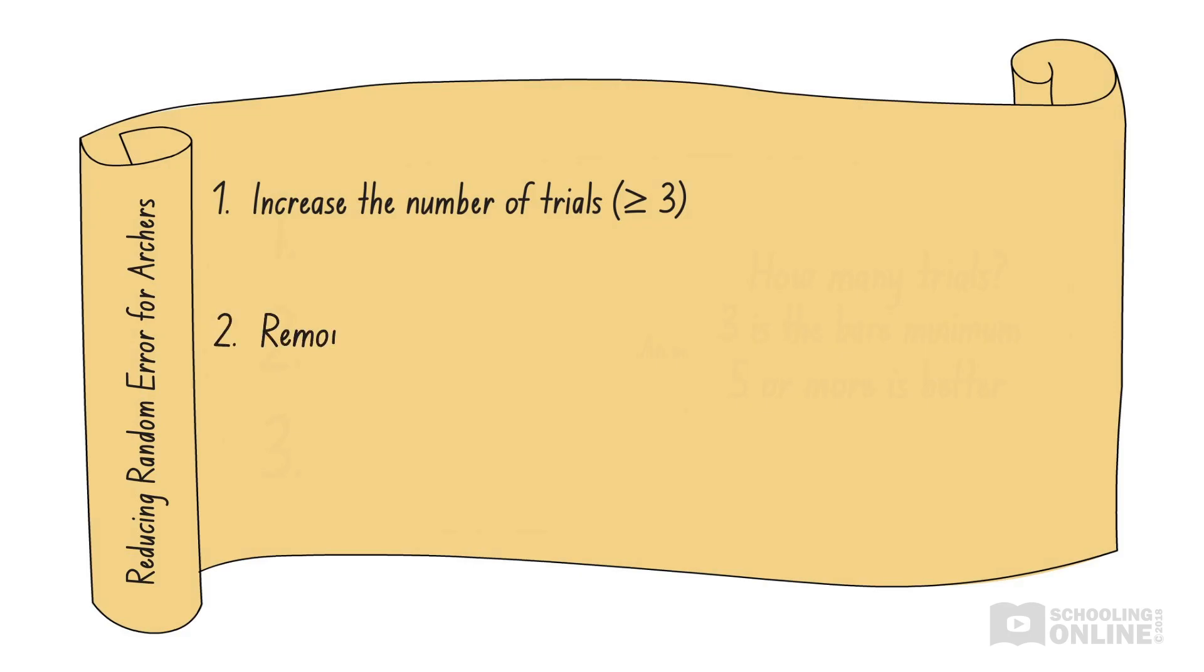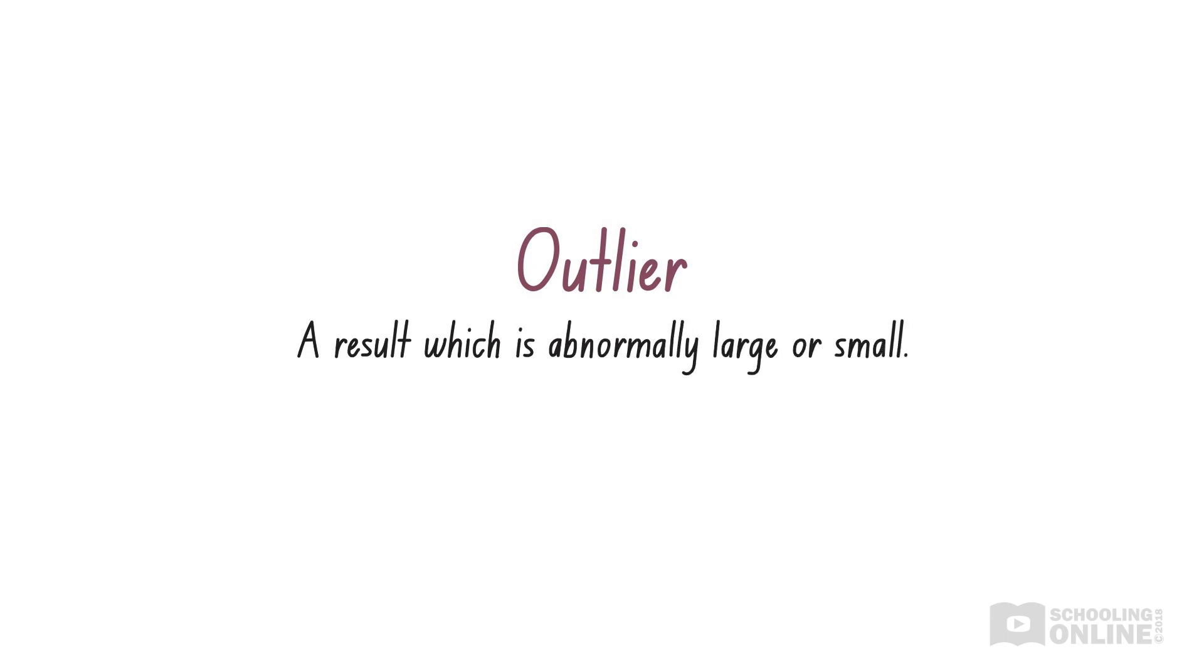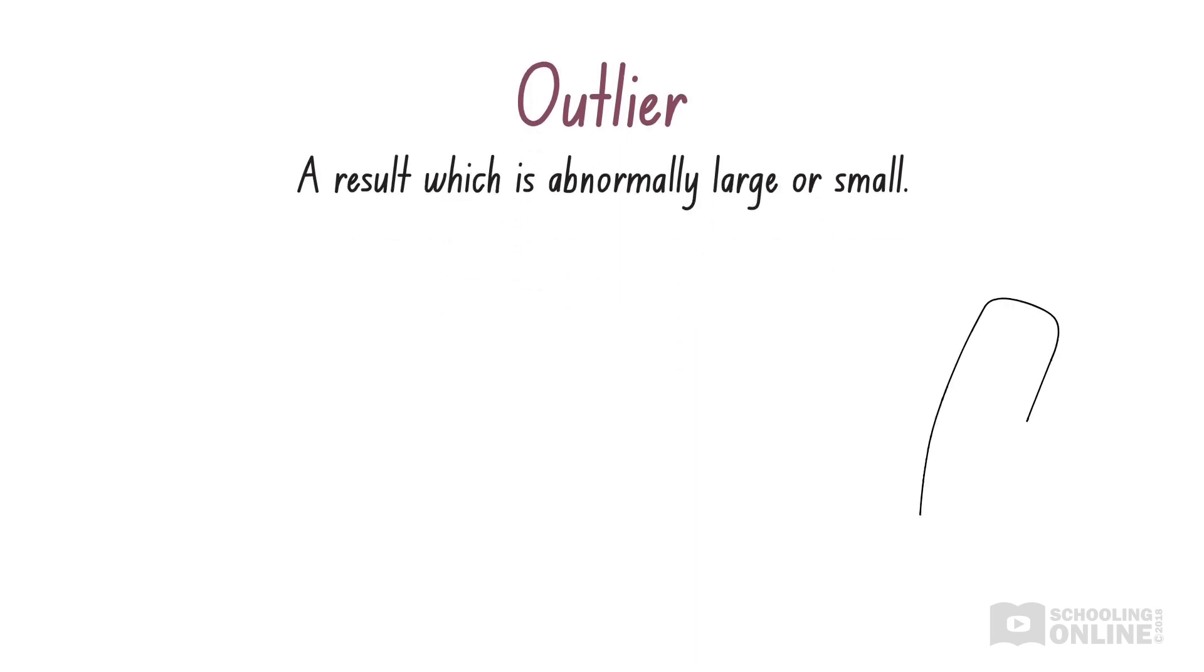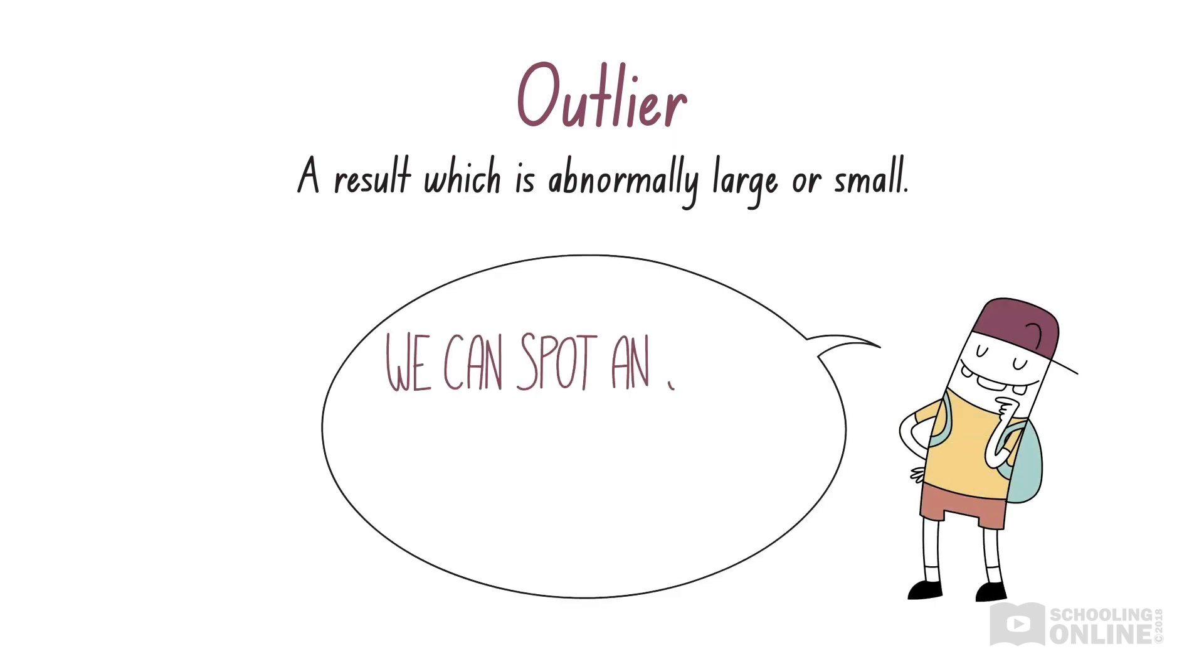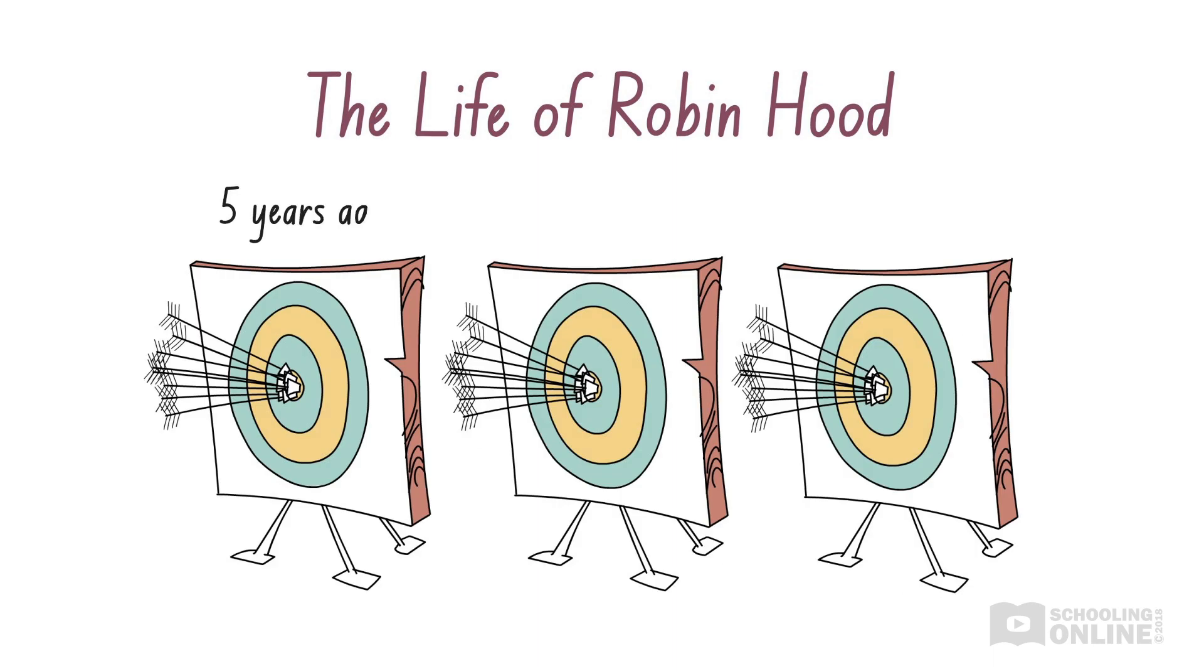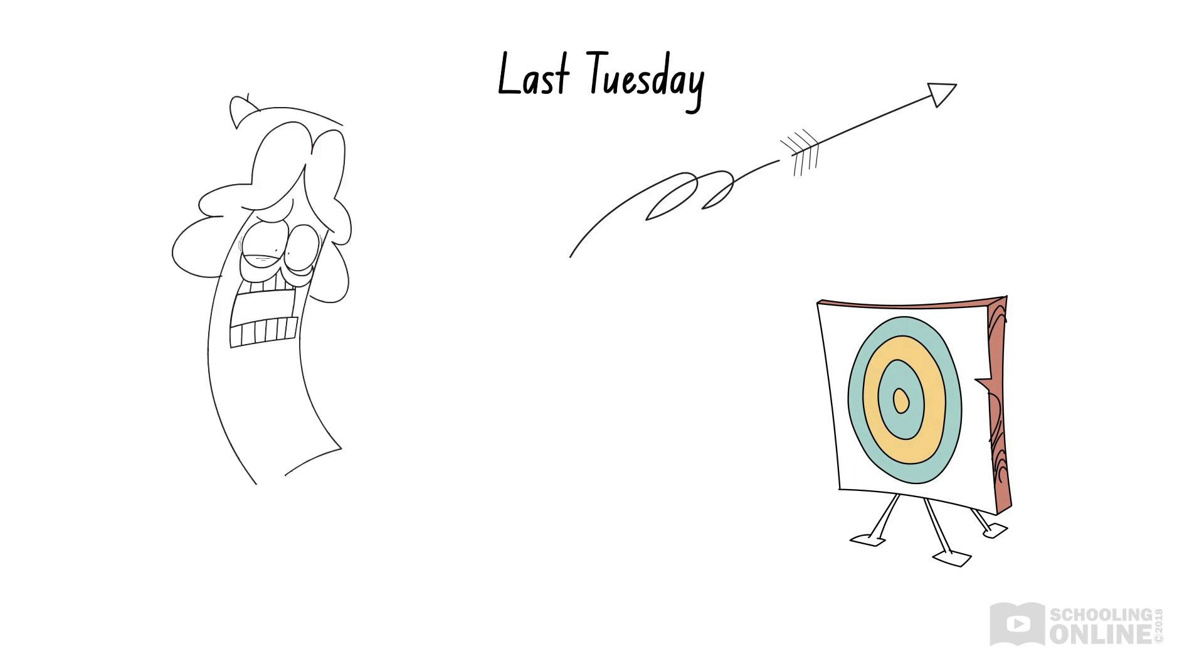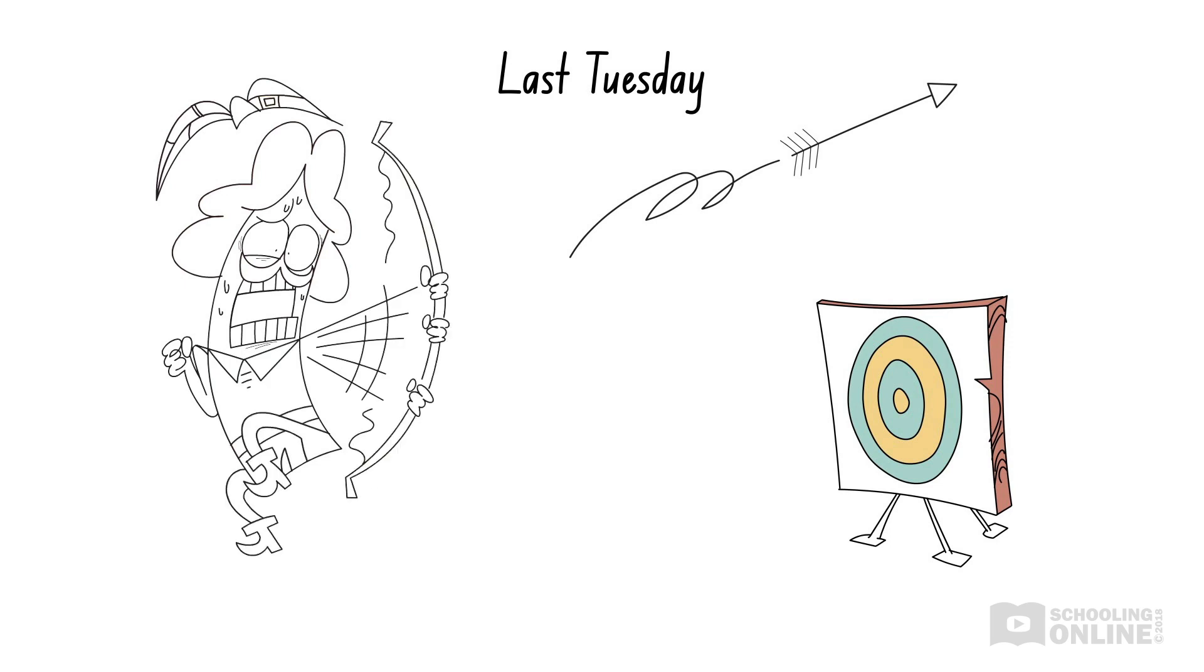The second way to reduce the effects of random error is to remove outliers from our results. An outlier is a result which is abnormally large or small. Outliers may be caused by extremely large random errors, making them much bigger or smaller than all the other data points. The only way we can spot an outlier is by collecting lots of results and comparing them. For example, let's consider Robin Hood's archery history over the past five years. As expected, the overwhelming majority of his shots land in the bullseye. But what's this? He completely missed the target during practice last Tuesday. This looks like an outlier.